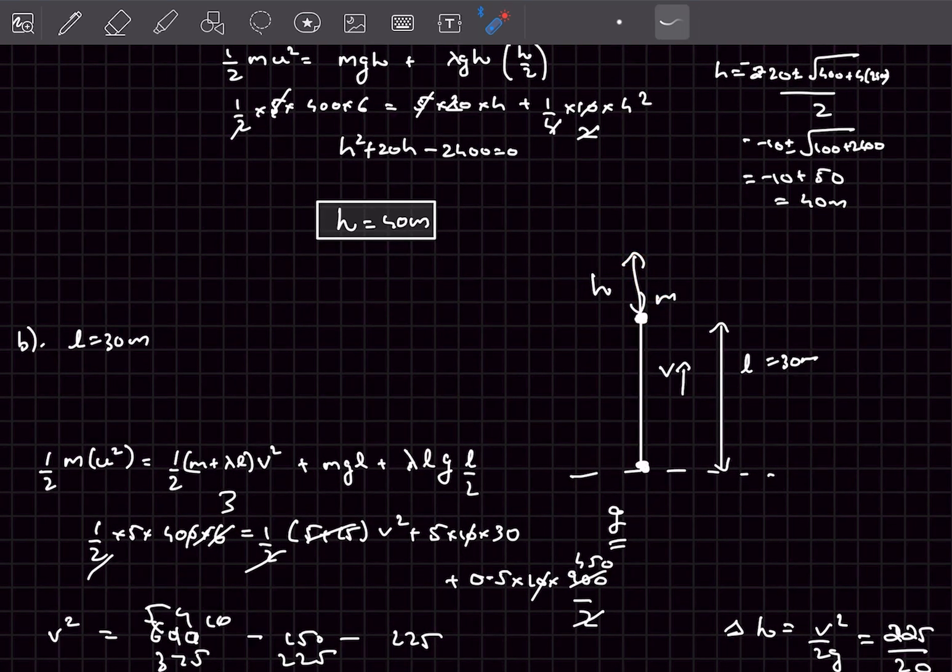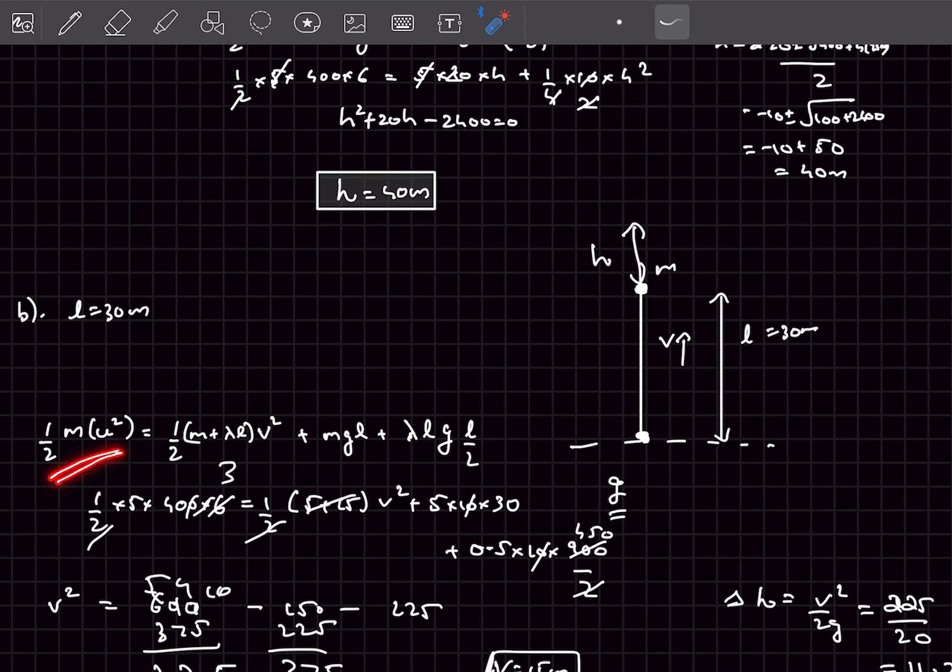We're going to use energy conservation. Initially, only the small m mass had kinetic energy, and finally this small m mass including the lambda l mass of the chain will gain some velocity v. The potential energy of the mass is m into g into l, and the potential energy of the chain will be lambda lg times l by 2.